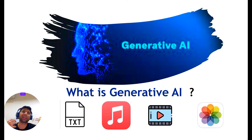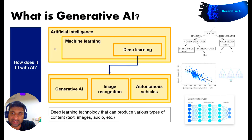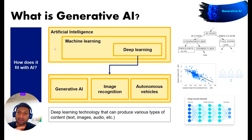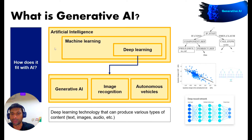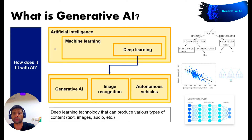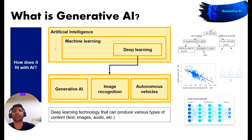So how does generative AI work? Generative AI works by using machine learning models. Machine learning is used to take a set of data and try to understand the patterns, relationships, causes and effects — all sorts of analysis on that data. It works on huge volumes of text to learn and understand patterns and relationships, then uses that knowledge to generate new content.